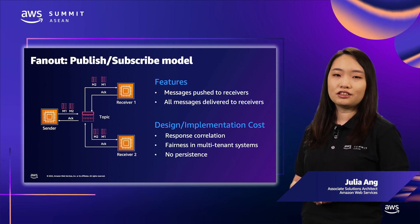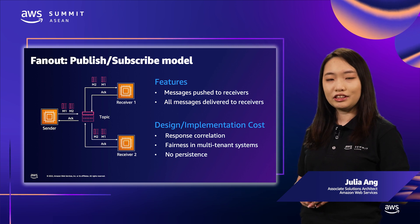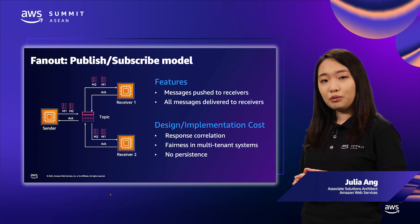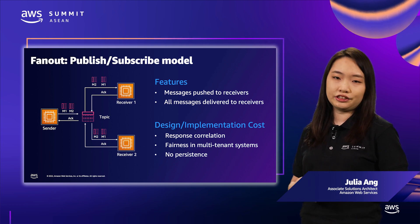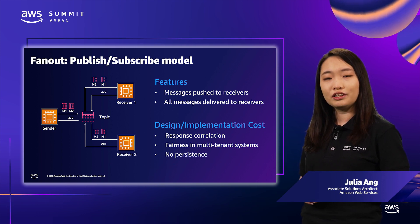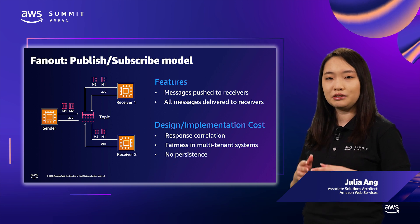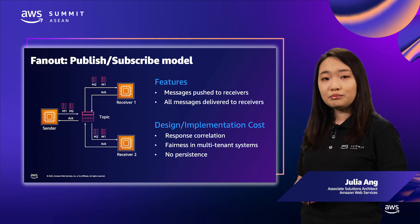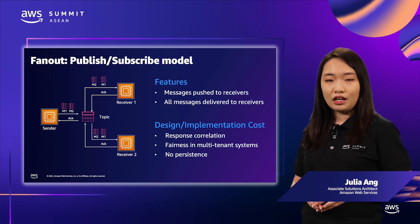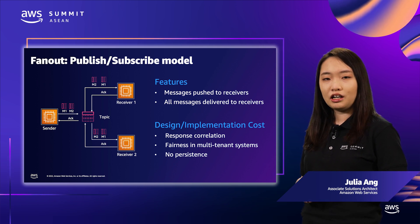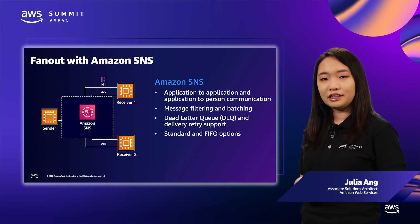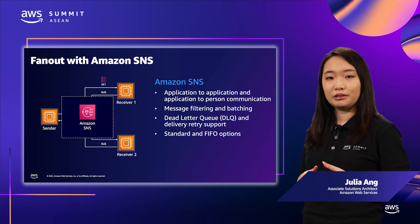The first two design considerations for this pattern are the same as for the queue pattern. The third consideration is that messages are delivered only after the receiver subscribes to a topic, which means historical messages will not be re-delivered and messages are not persisted. You can use Amazon SNS to implement this pattern on AWS.